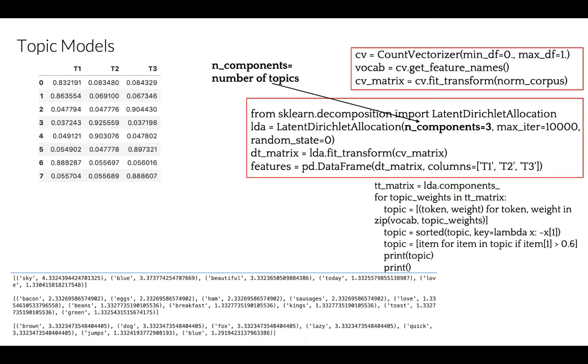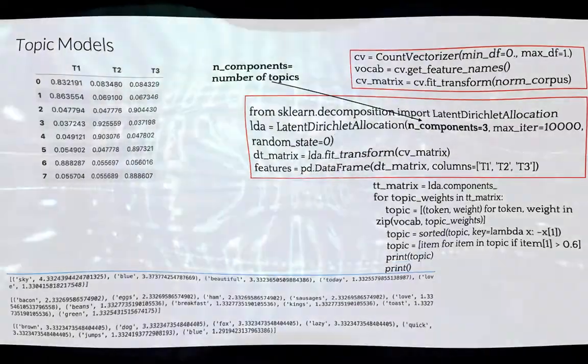Let's add also our vocabulary that we built from count vectorizer by using get feature names. And now we can see which word, or which term, belongs to which topic. For instance, topic 1 will contain sky, blue, beautiful, today, and love terms. All three topics are quite distinct from each other based on their constituent terms.